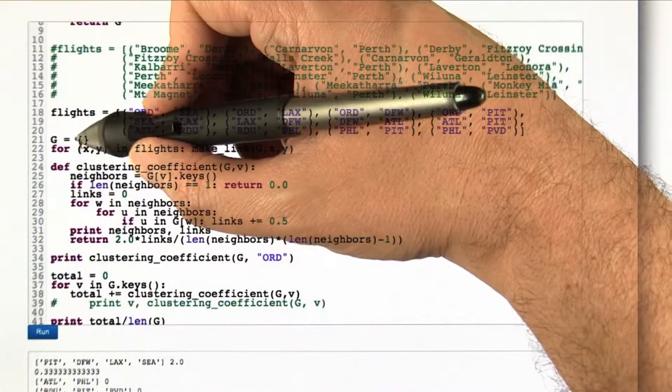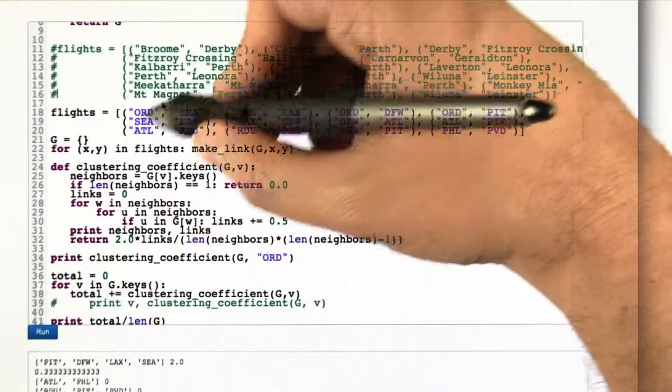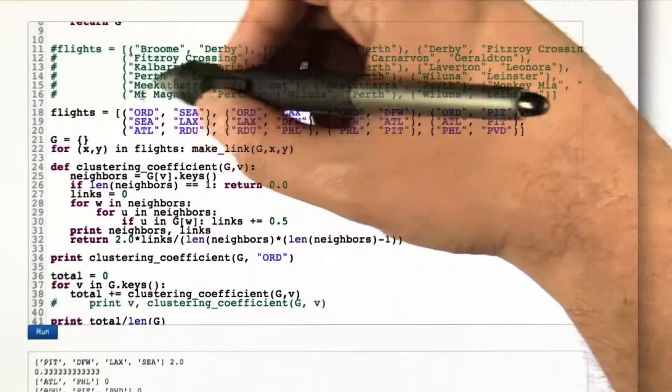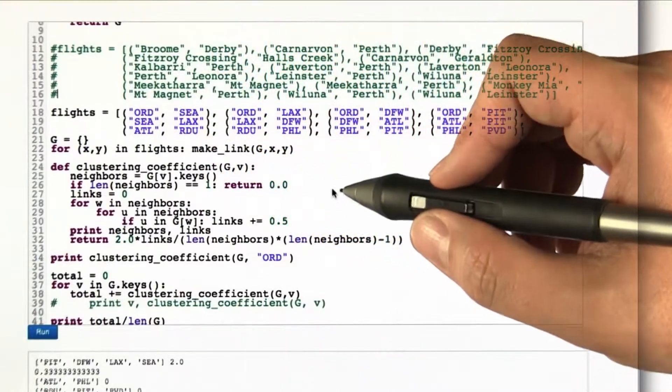And to create the graph, I start off with an empty graph and then for each of the pairs that constitute the endpoints of a flight, we make a link between them like we were doing last time.